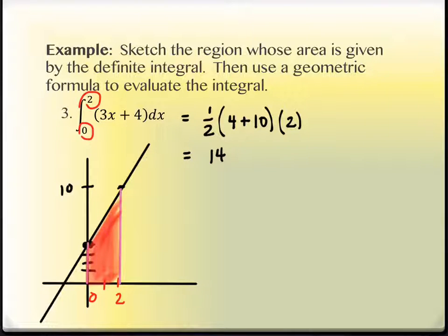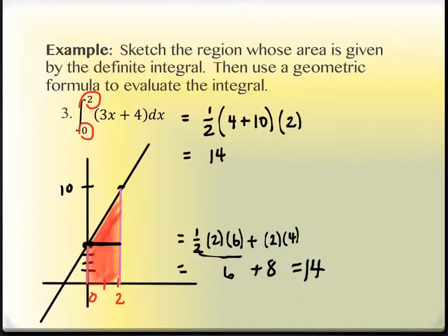Let me show you how to do it if you don't see the trapezoid. You can break this into a triangle and a rectangle. The area of a triangle is one half base times height. The base would be 2, the height would be 6. Plus the area of the rectangle, which is 2 times 4. The first piece is 6, the second is 8, that's 14. So good that we get the same answer both times.